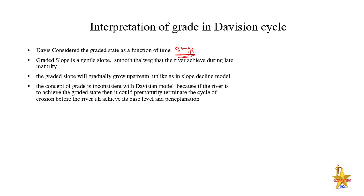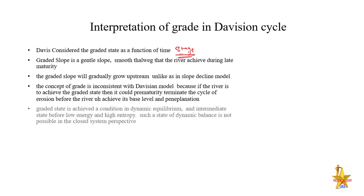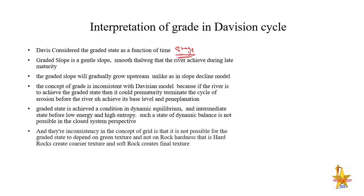The concept of gradient is inconsistent with the Davisian model because if the river achieves the graded state, it could prematurely terminate the cycle of erosion. The graded state is a condition of dynamic equilibrium — an intermediate state before low energy and high entropy. As J.T. Hack noted, entropy needs to be maximized; otherwise the system will not be stable and will try to achieve stability. Dynamic equilibrium is not possible in a closed system perspective, and graded state cannot depend solely on rock hardness.